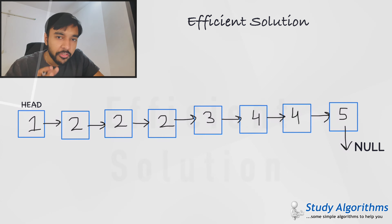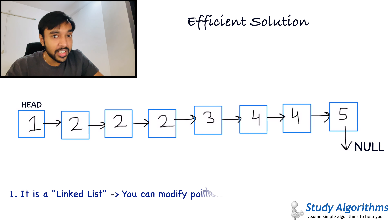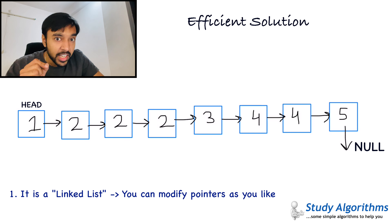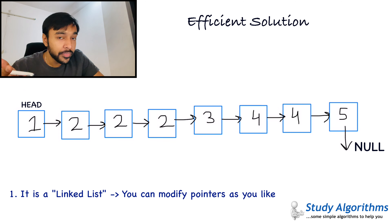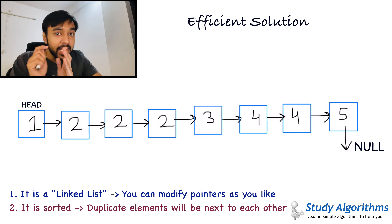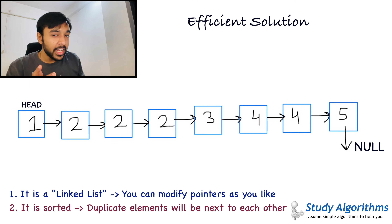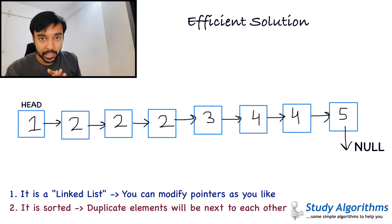To come up with an efficient solution to this problem, you need to take advantage of two facts. Number one, that this is a linked list — in a linked list you can modify the pointers as per your wish. Number two, you need to take advantage of the fact that this list is already sorted. That means any of the duplicates that exist in the list would always be adjacent to each other. Keeping these two facts in mind, we can come up with an efficient solution that can save us both space and time.